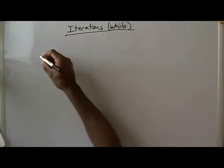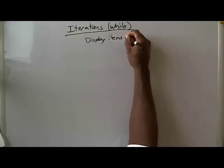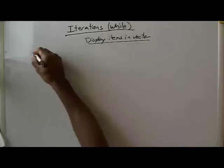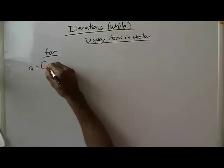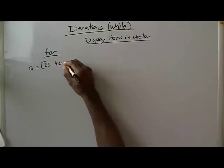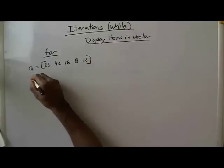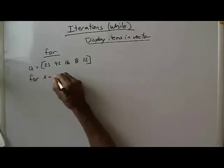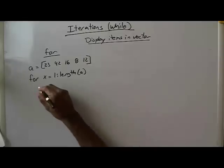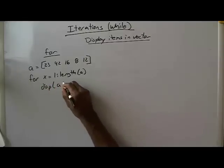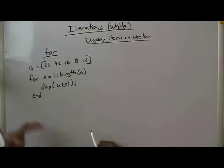The first example, if you recall, was just to display the items in a vector. On the for loop side, if we had some vector A equal to 23, 42, 16, 8, and 12, we would do: for x equals 1 colon length of A — this is the indexing method — and we would display A indexed at x, then end that. This is the script showing how we're doing the for loop.